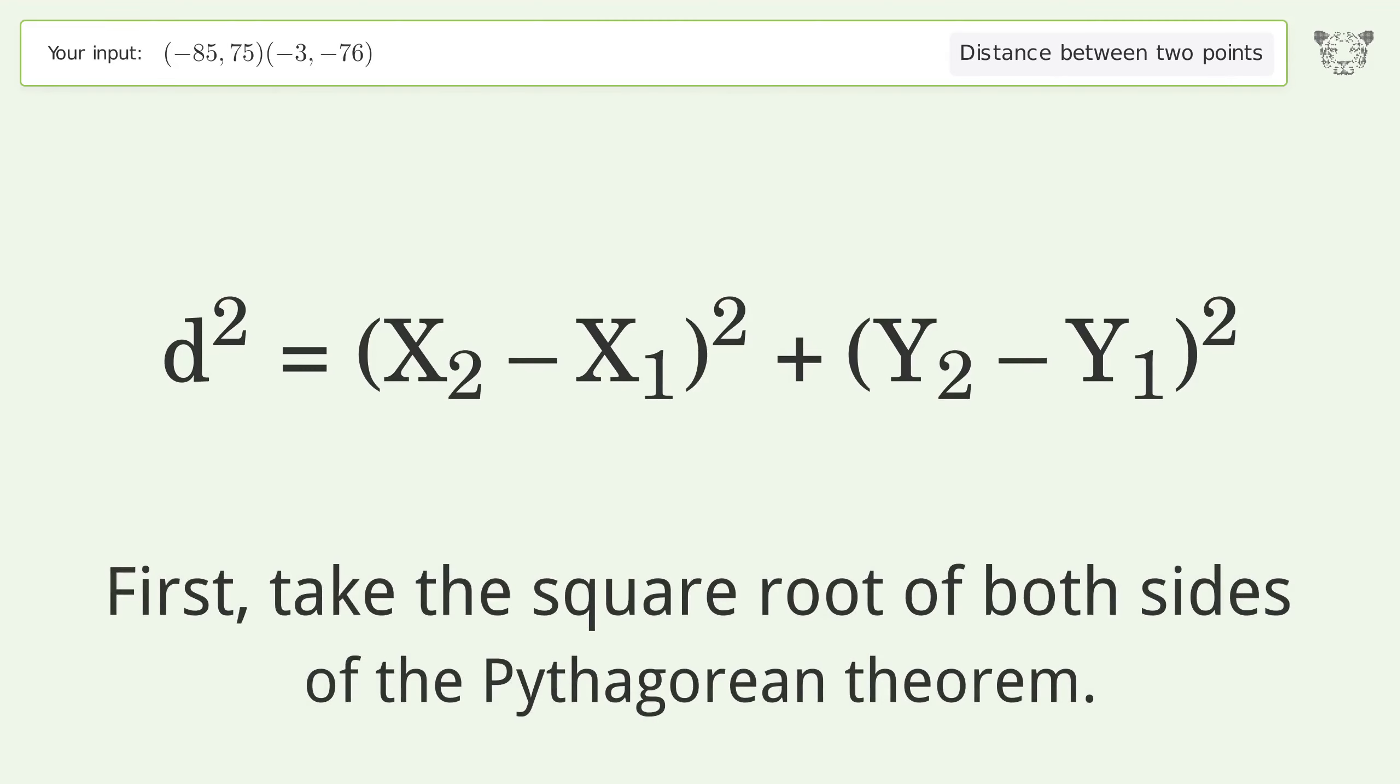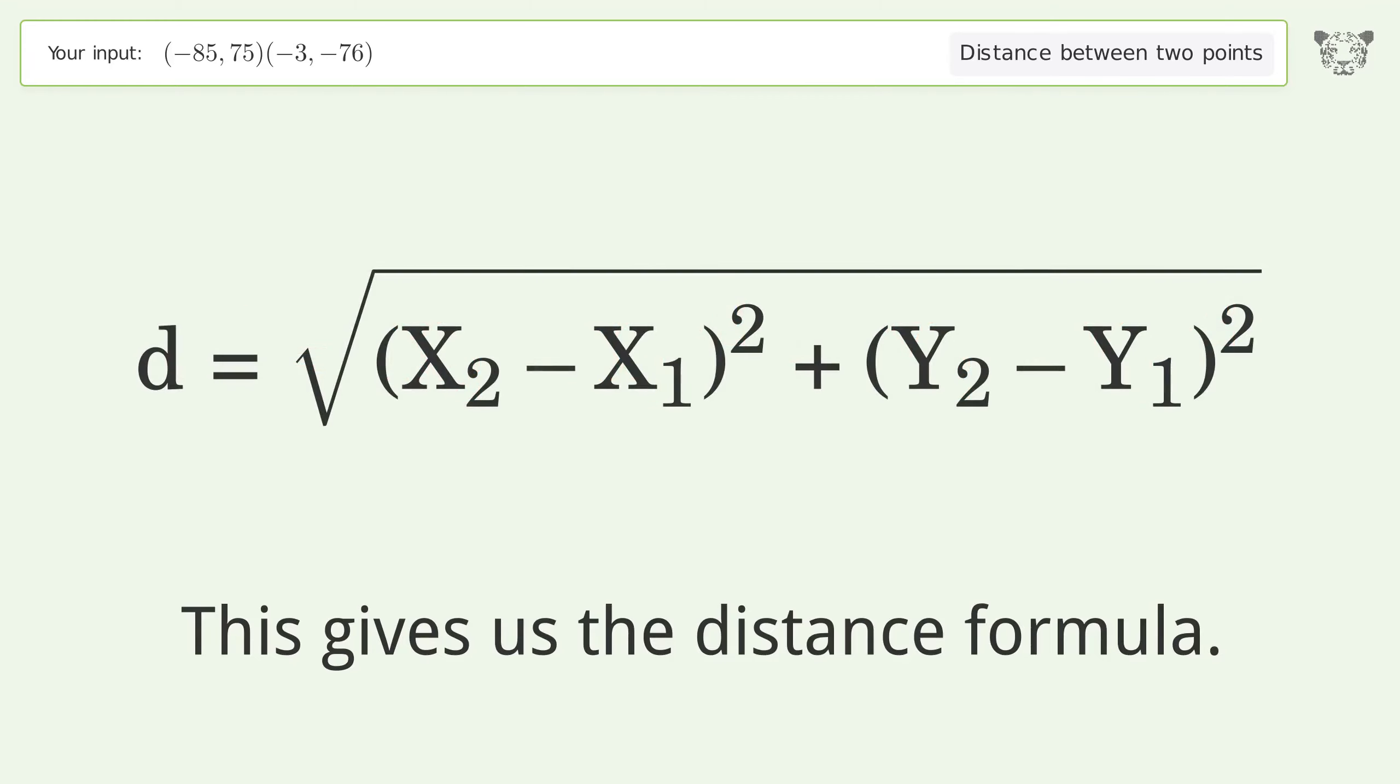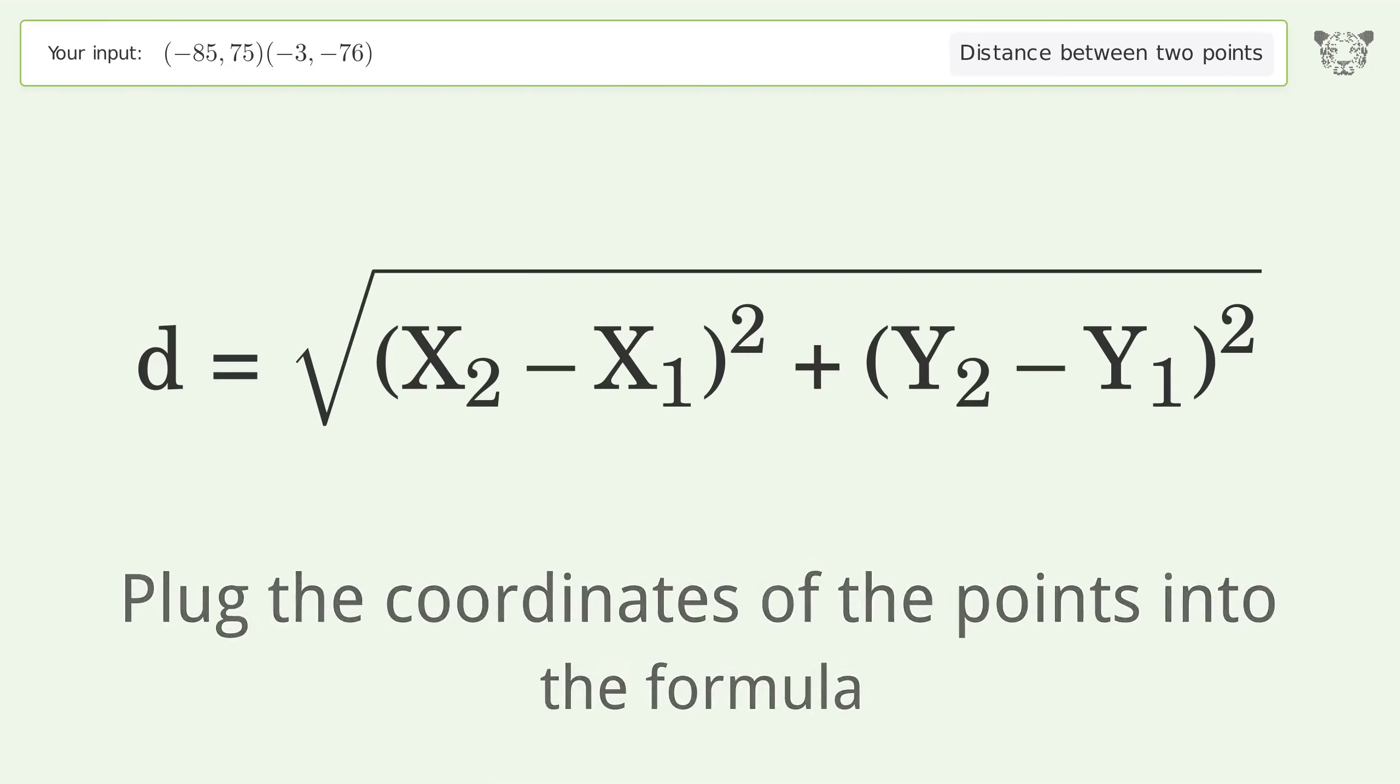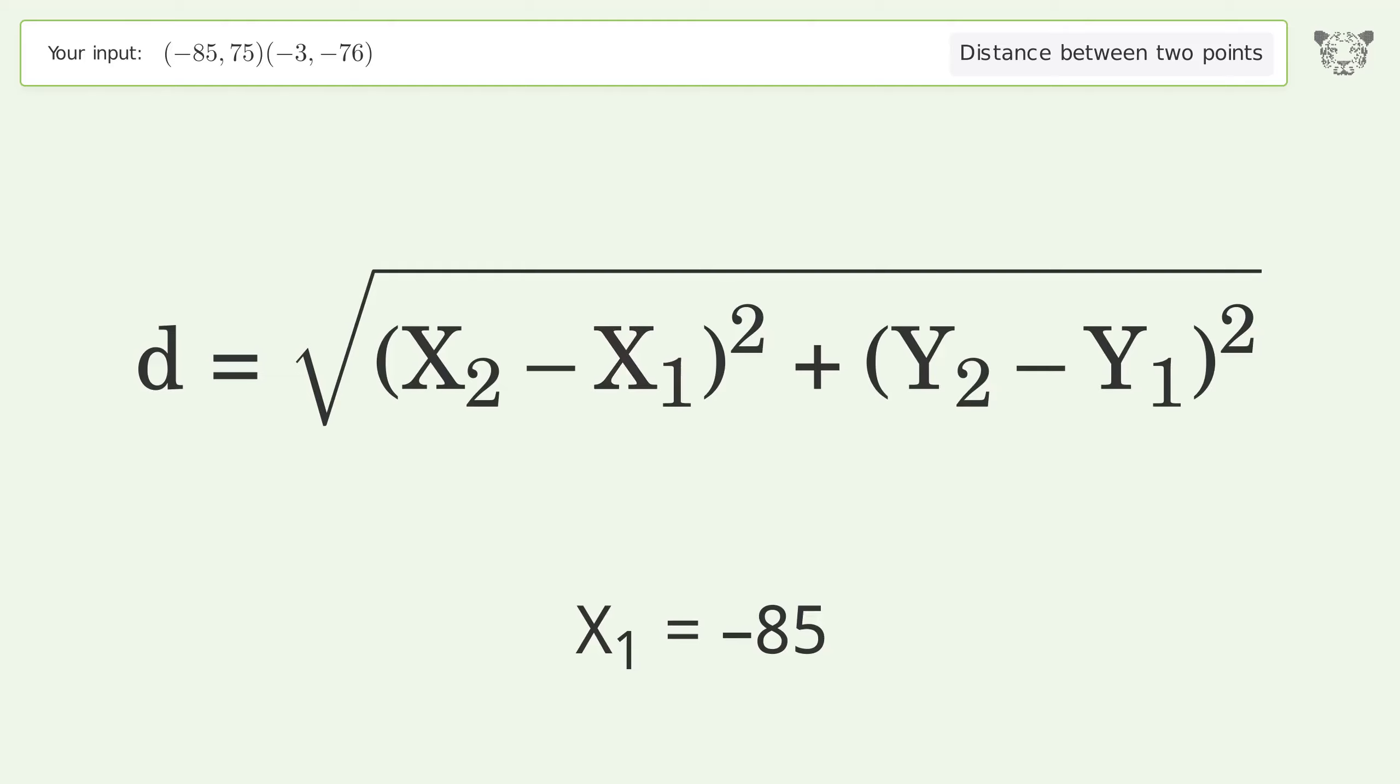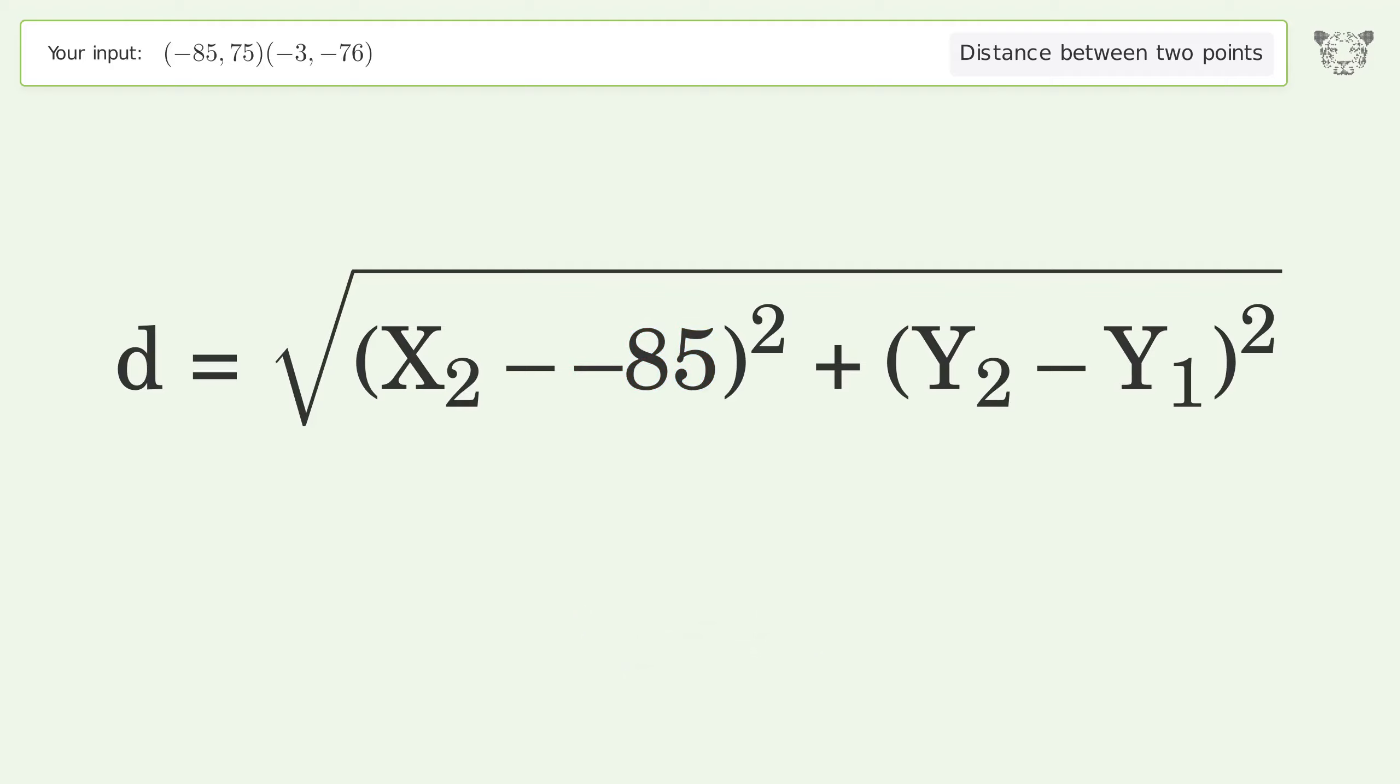First, take the square root of both sides of the Pythagorean theorem. This gives us the distance formula. Plug the coordinates into the formula: x₁ = -85, x₂ = -3, y₁ = 75, y₂ = -76.